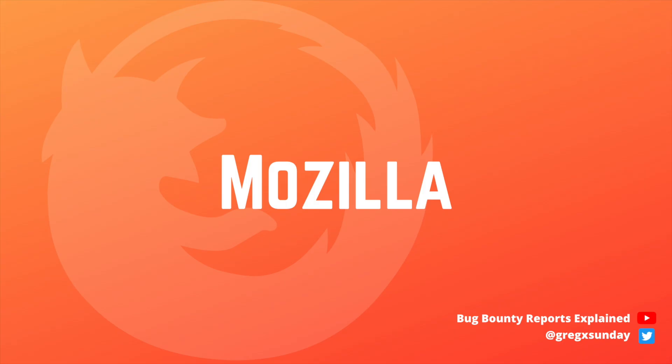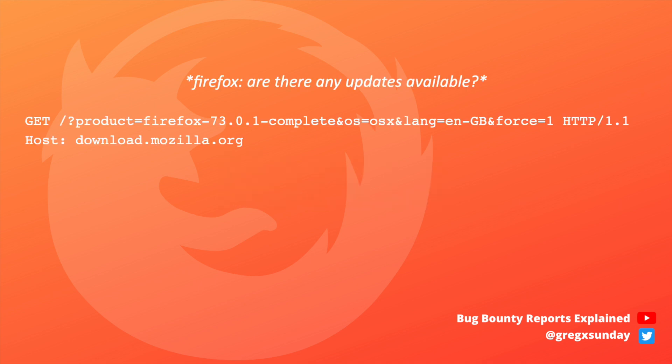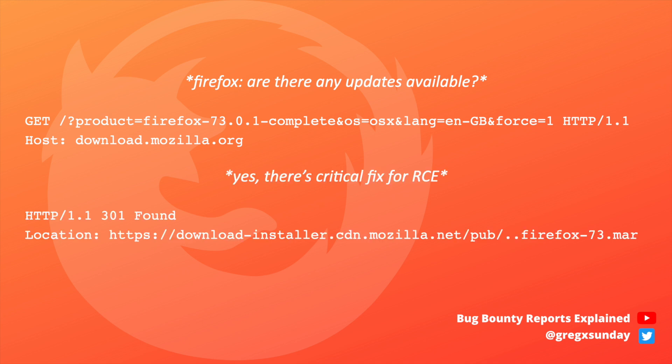Many times you can use cache poisoning to cause a denial of service. This is often not very impactful and not very welcome by triagers. However, in my next example you could disable updates for the Firefox browser, which would be critical if there were a fix for a zero-day vulnerability, keeping all users insecure.